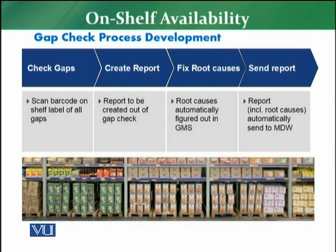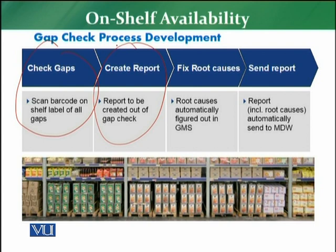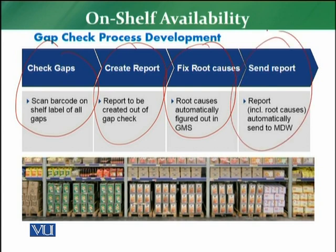The gap check process has 4 steps. First, check gaps — scan the barcode on the shelf label of all gaps. Second, create a report of all products appearing in the gap check. Third, find the root cause — the goods management system can tell you whether the gap was caused by a delay in ordering, delay in delivery, or anything else. Fourth, send a report that includes the root cause analysis so you can avoid the gap in the future.